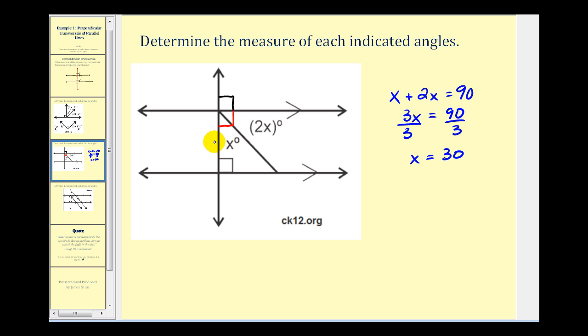And therefore, this angle here that measures x degrees would be 30 degrees. And this angle here that is 2x degrees would be 2 times 30 or 60 degrees. Notice that the sum of these two angles is equal to 90 degrees. Let's take a look at another example.